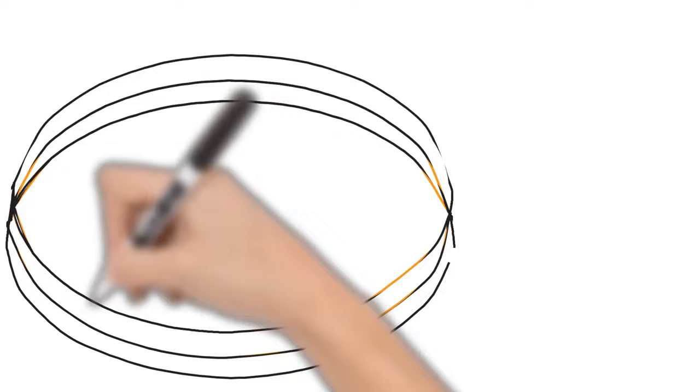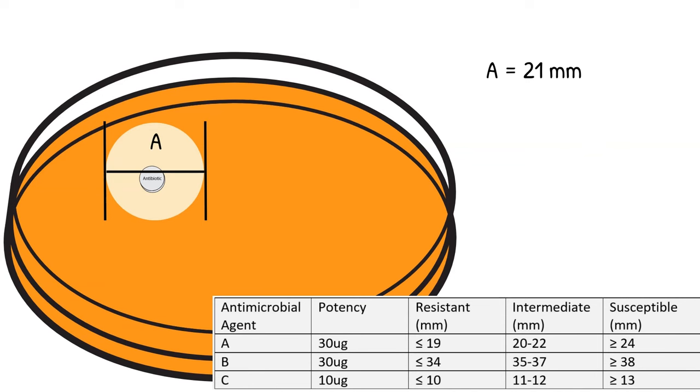Let's look at the first sample, Disc A. It looks like 21 millimeters to me. Let's write it down and take a look at the table. Disc A, 21 millimeters falls in intermediate range.